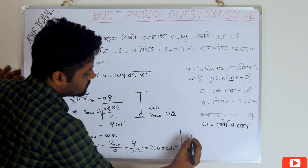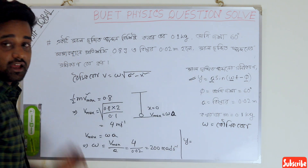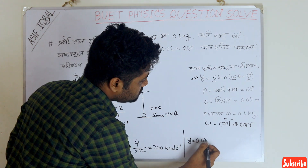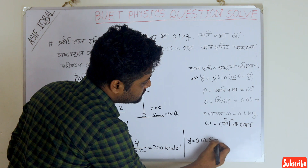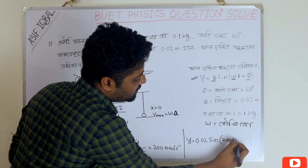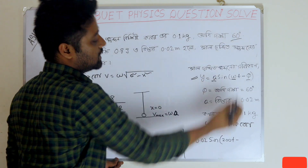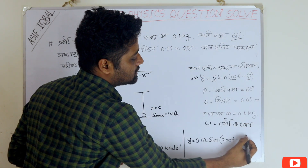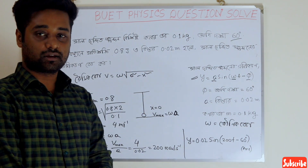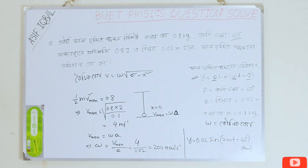So the final equation is y equals 0.02 sin(200t minus phi), where phi equals 10 and A equals 0.02. That is the result of the problem. We will move on to the next question. Thank you for watching the solution.